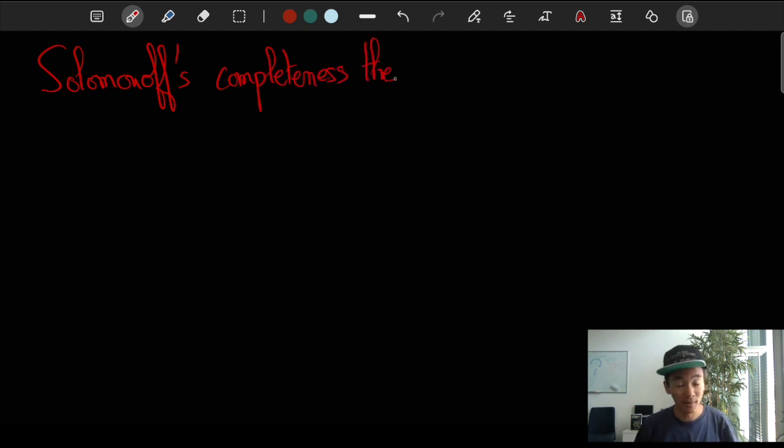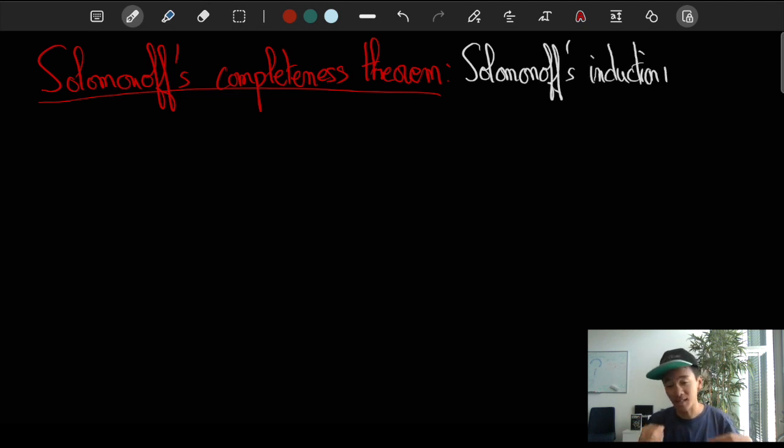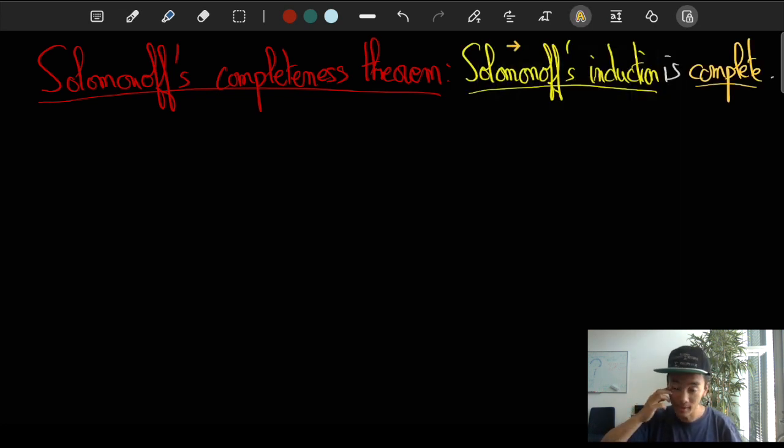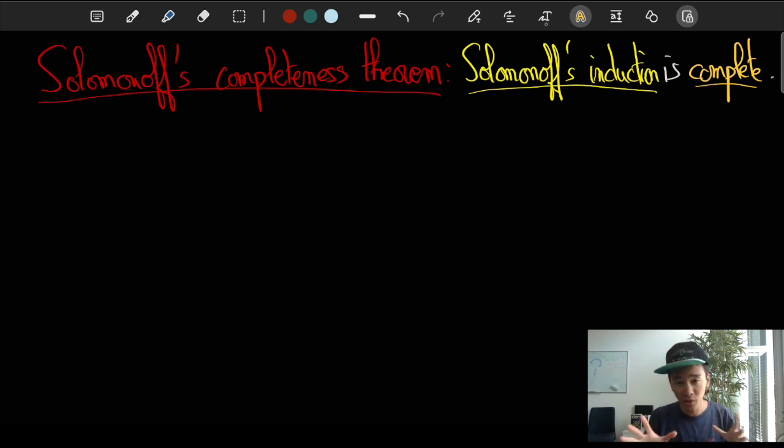This theorem basically says that Solomonoff's induction approach is the ultimate solution to making predictions. At least it has extremely nice properties that are essentially impossible to beat, and we're going to discuss more of this in future videos as well.